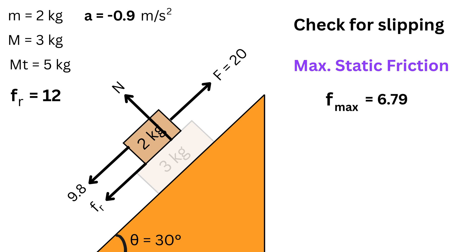Now is the time to compare. Required friction f_R is 12 newtons to keep both the blocks moving together. Maximum possible static friction f_max is 6.79 newtons. Since the required friction is much greater than the maximum possible friction, the static friction is not strong enough to keep them together.